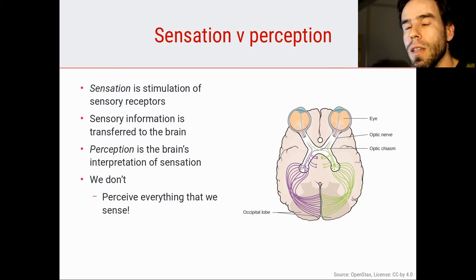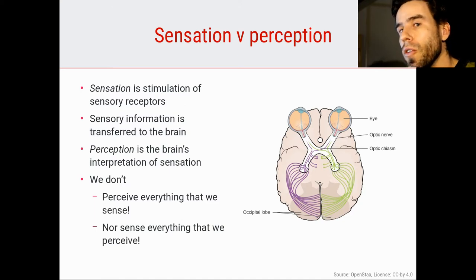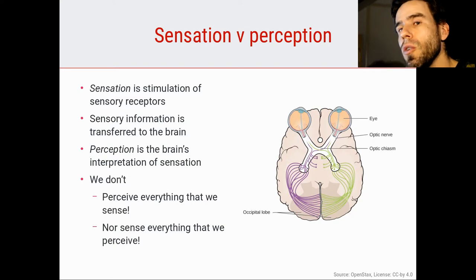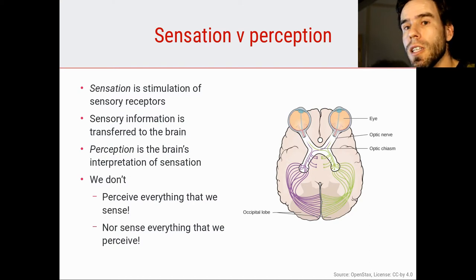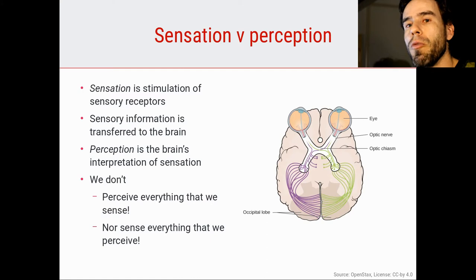We will get back to that in the lecture on attention and consciousness. Now, conversely, and perhaps a little bit more surprisingly, not everything that we perceive corresponds to something that we sense. Our brain can interpret the world in such a way that it does not match what our senses actually tell us. And if that happens, then what we essentially have is misperception — or, for example, an optical illusion, which is a form of misperception.